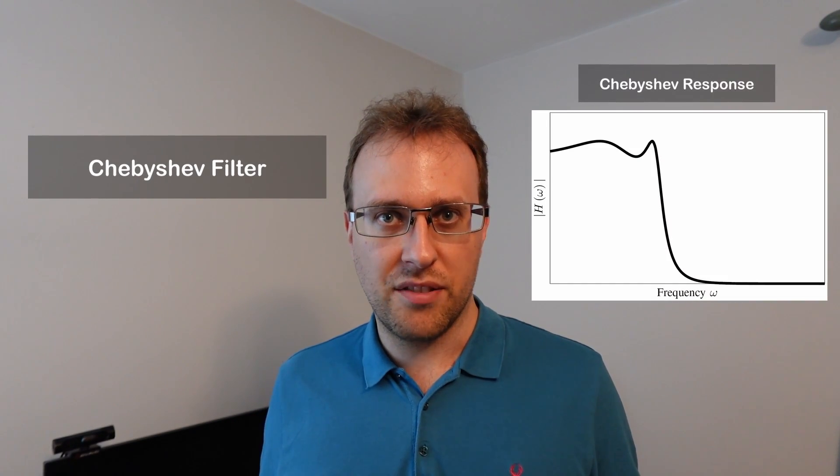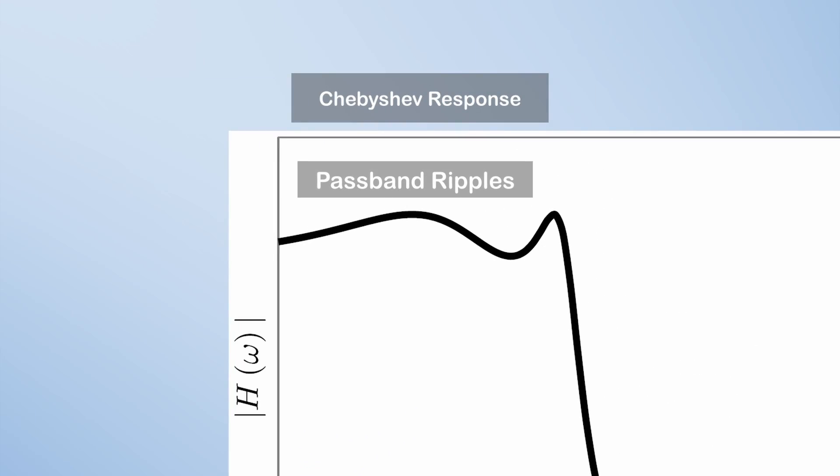One type of filter that allows a more narrow transition band, so it can have steeper transitions between pass bands and stop bands, is the Chebyshev filter. The trade-off that the Chebyshev filter makes is that it has ripples, so you get larger deviations in the magnitude of the frequency response in the pass band.